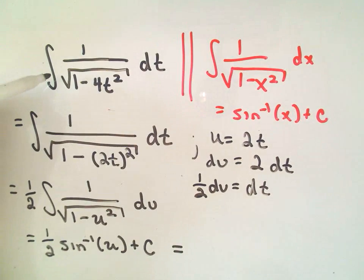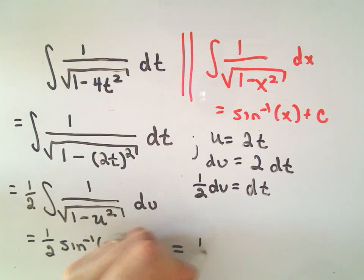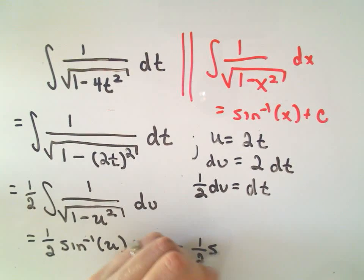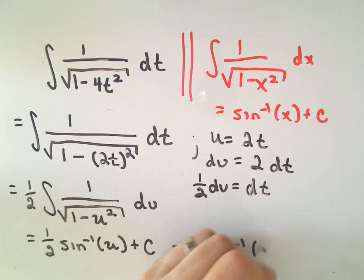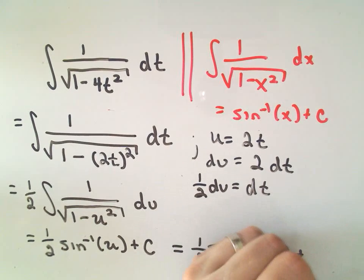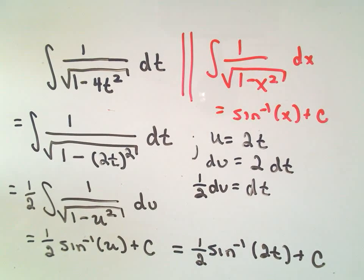So, it says we'll simply get 1 half arcsine of u plus c. But, again, since we started with t's in this problem, let's finish out with t's. So, we'll get 1 half arcsine of 2t plus c, and that's your answer.